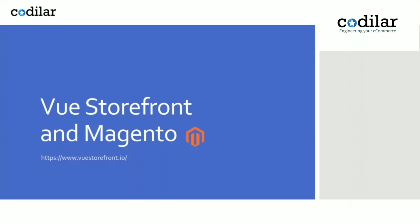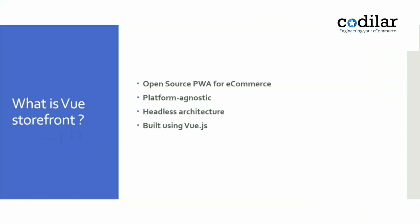Vue Storefront is an open source PWA for e-commerce built using Vue.js. It's a platform-agnostic framework, meaning if you've built your application using Vue Storefront as a front-end and Shopify as your back-end, at any point you can change your back-end to Magento or any other e-commerce platform without affecting your front-end — your website looks the same. Only the data source will be different. It follows the headless architecture pattern and comes out of the box with PWA features like offline support and offline auto-placing.